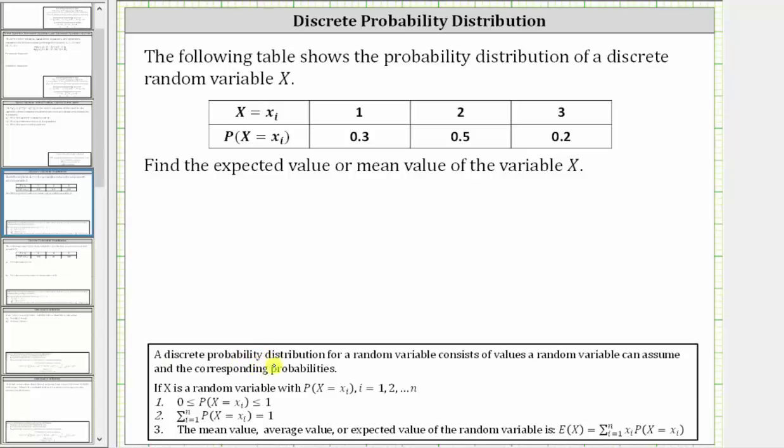A discrete probability distribution for a random variable consists of values a random variable can assume, given in the first row, and the corresponding probabilities, given in the second row.